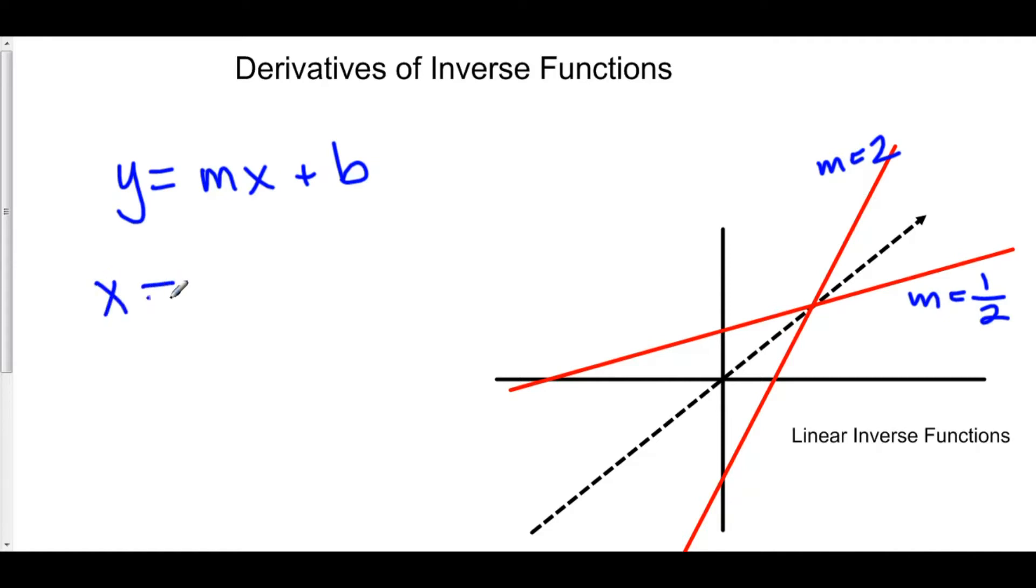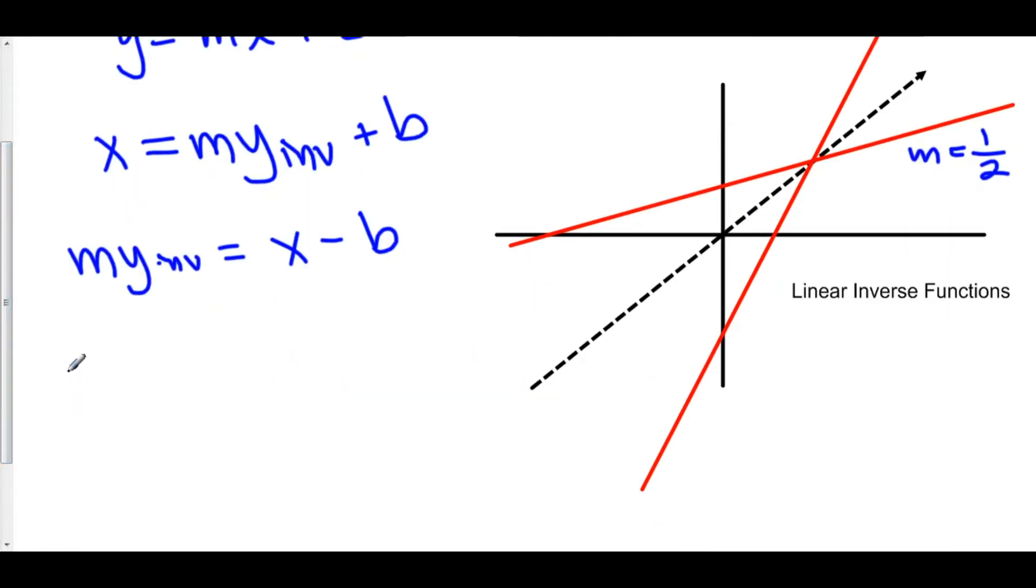Here we have x equals m times y inverse plus b. To solve for y inverse, I'll subtract b. So we have m times y inverse is equal to x minus b. And now we can divide everything by m. So y inverse is equal to 1 over m times x minus b over m.